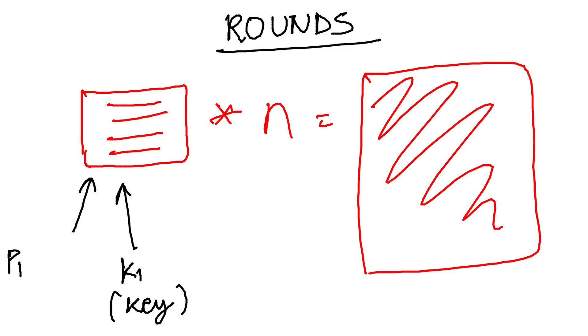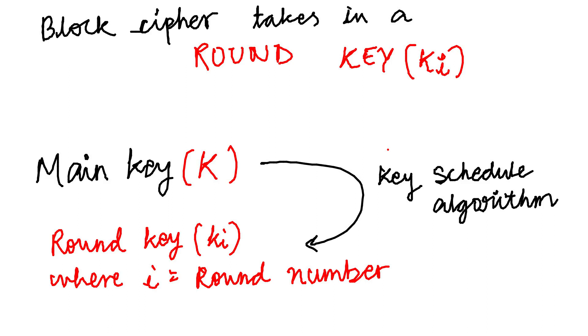They are short sequences of operations that are weak on their own, but stronger when repeated over and over again. That is, it becomes stronger in number. It takes in a key called round key that is derived from the main key K using an algorithm called key schedule.